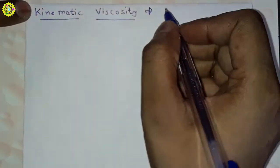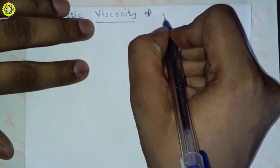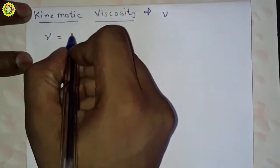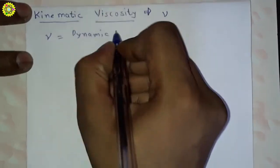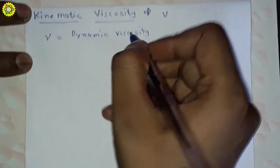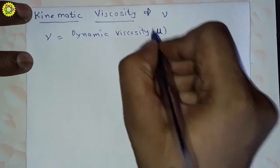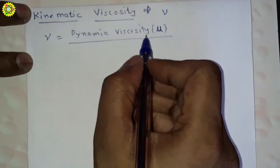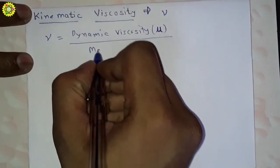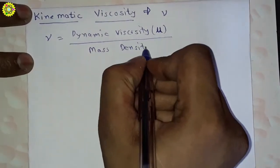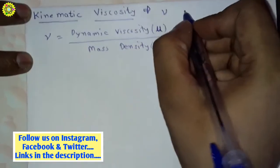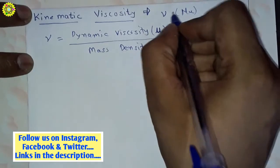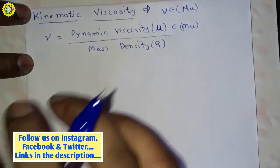Kinematic viscosity is denoted by nu. Nu is equal to dynamic viscosity mu divided by mass density rho.